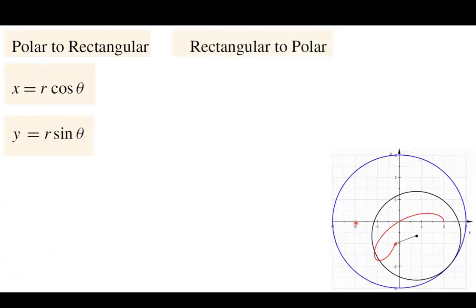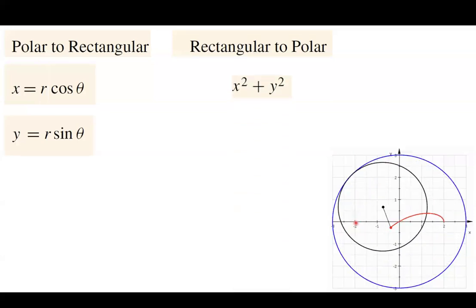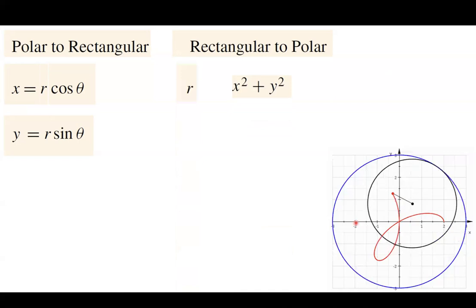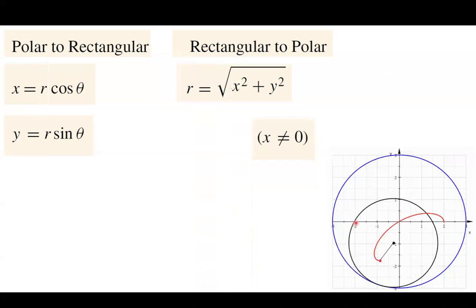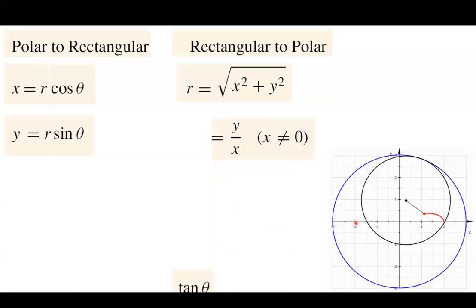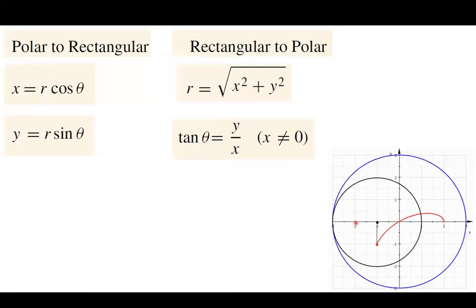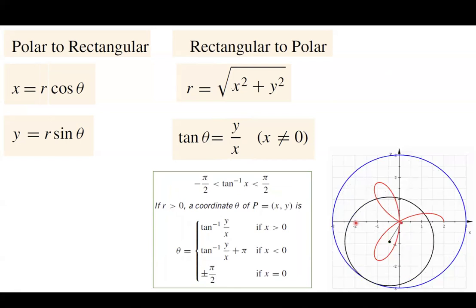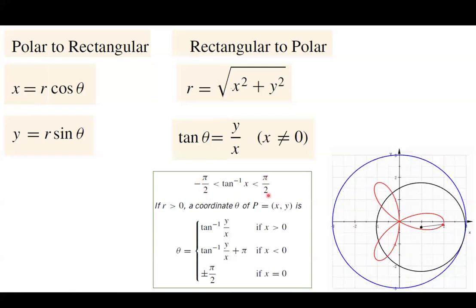From rectangular coordinate system to polar coordinate system: the square root of X squared plus Y squared equals R. And given X is not 0, Y divided by X is the tangent of theta. Remember that we are going back to precalculus — the inverse tangent is bounded between negative pi over 2 and pi over 2.